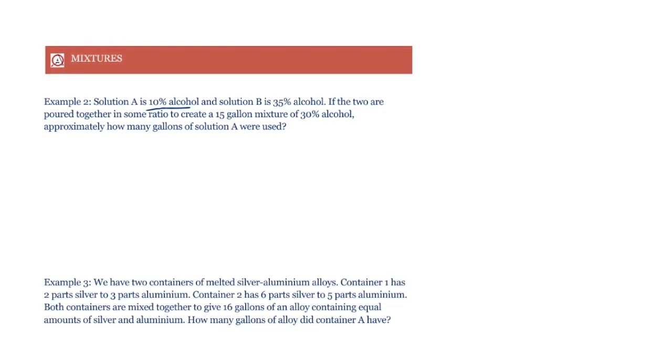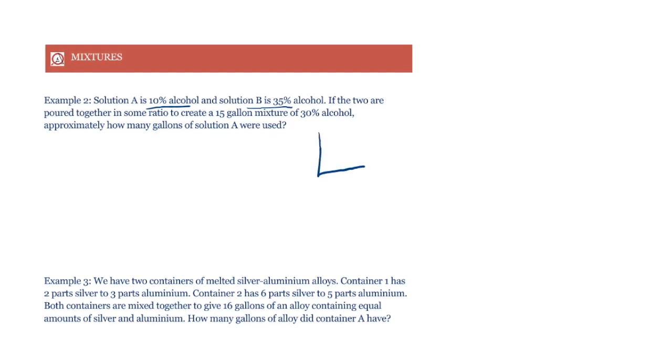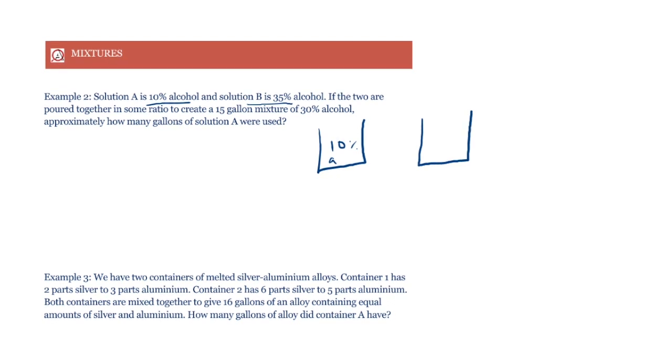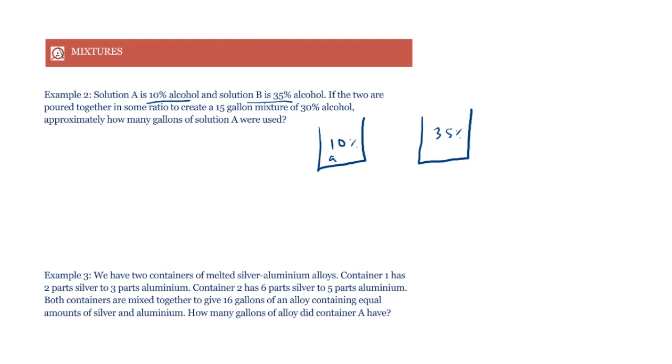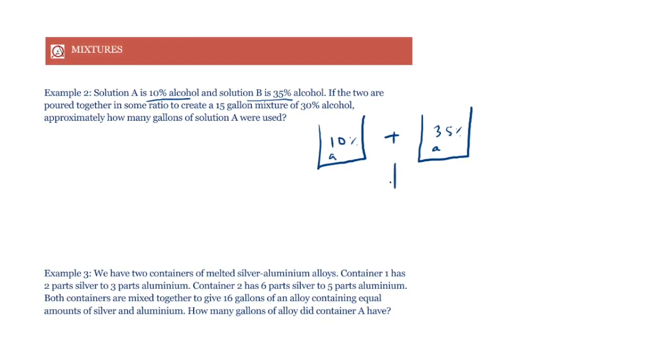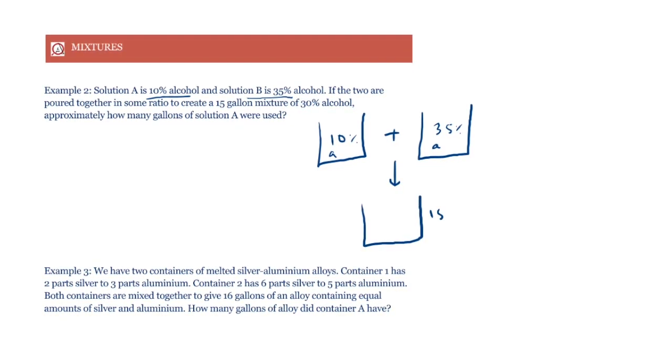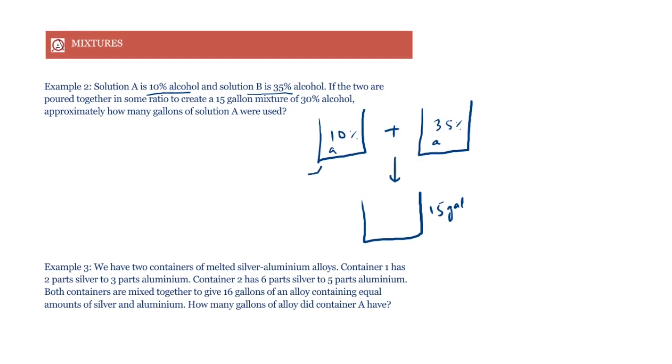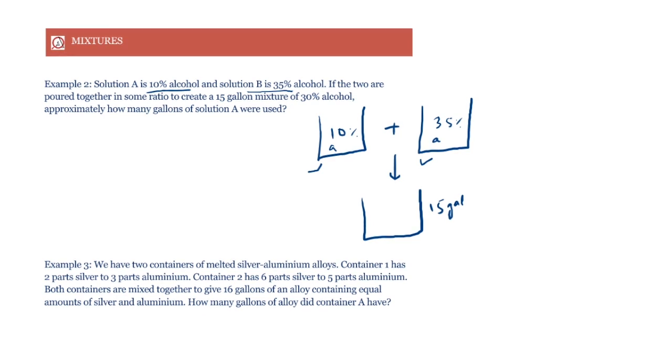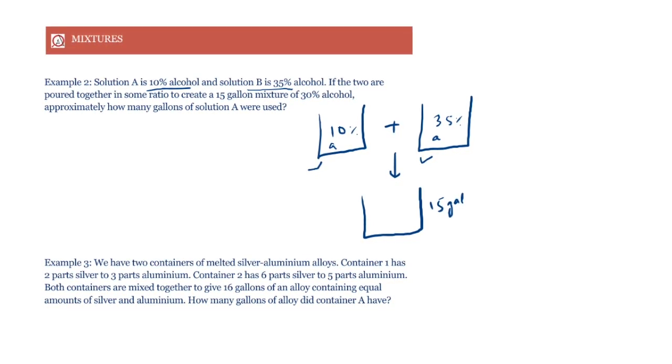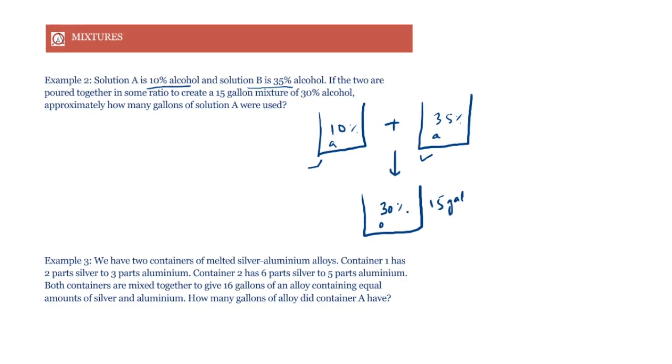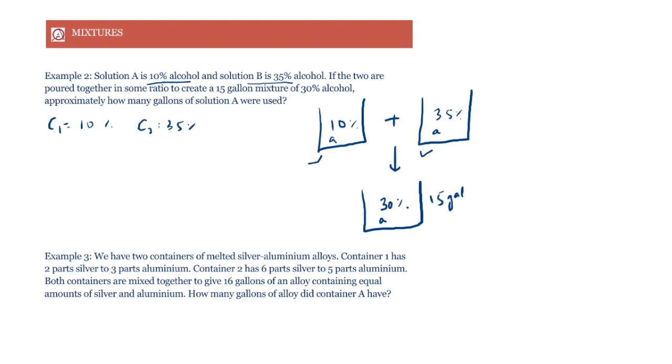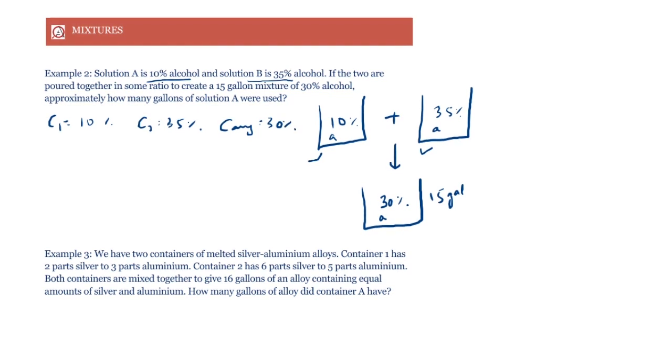So solution A is 10% alcohol and solution B is 35% alcohol. So let's make that small diagram that we did last time as well. So we say this is 10% alcohol, which means 90% water. And here we have 35% alcohol, which means 65% water. And we mix them together and we get a resultant, which is a 15 gallon mix. So what can we say? First of all, that the volume of this one and the volume of this one together is 15 gallons. That is why the overall volume of the mixture is 15 gallons. And what is the concentration over here? It is given to be 30%. So this is a 30% alcohol solution. So then we have C1 is 10%, C2 is 35% and C average is 30%. Let's use a formula now.